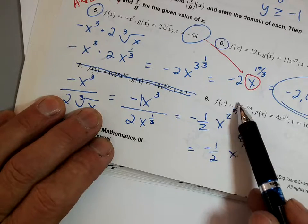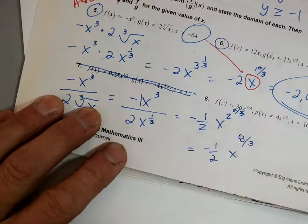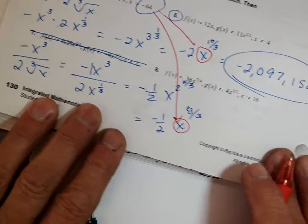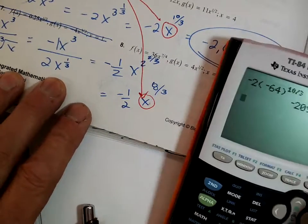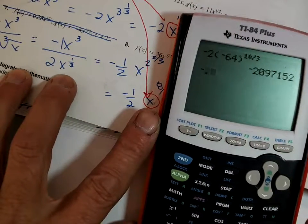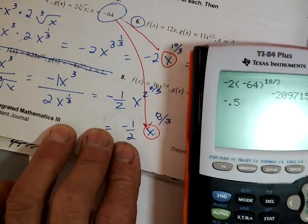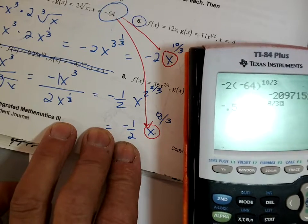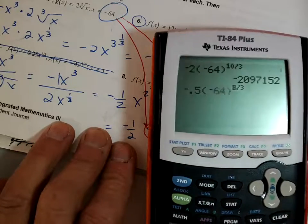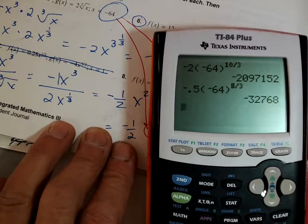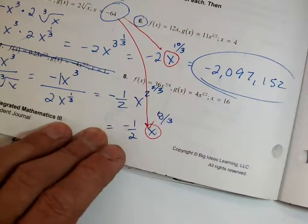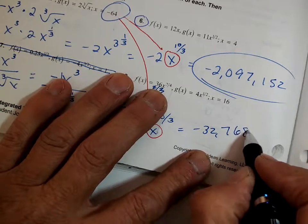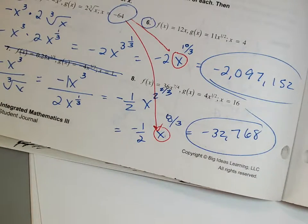Now let's evaluate at negative 64. I plug negative 64 in and use the calculator: negative 0.5 times parentheses negative 64 to the power of 8/3. I get an answer of negative 32,768. This is a hard assignment — I want you to work on it.